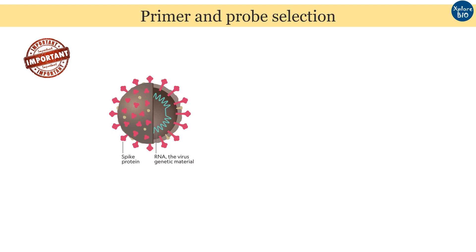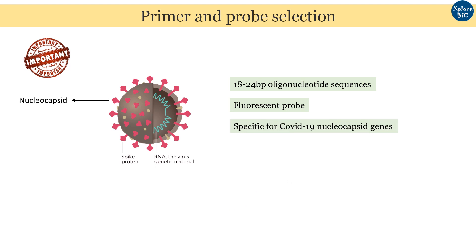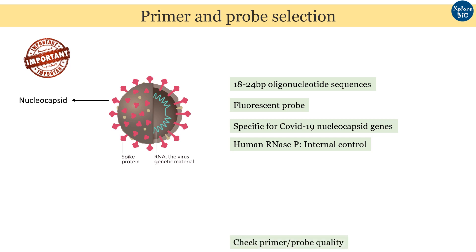Primer and probe design is the most important factor determining the accuracy of RT-PCR results — poor designing leads to false results, and this cannot be overlooked in COVID-19 testing. Primers are oligonucleotide sequences of 18–24 base pairs long, while probes are usually shorter at 8–12 base pairs. For COVID-19 detection, two or more primer pairs and probes specific for COVID-19 nucleocapsid regions are designed using software like Primer3. Human RNase P is also taken as a control to check PCR success. Melting temperature, self-complementarity, and loop formation ability are appropriately chosen for successful PCR amplification.